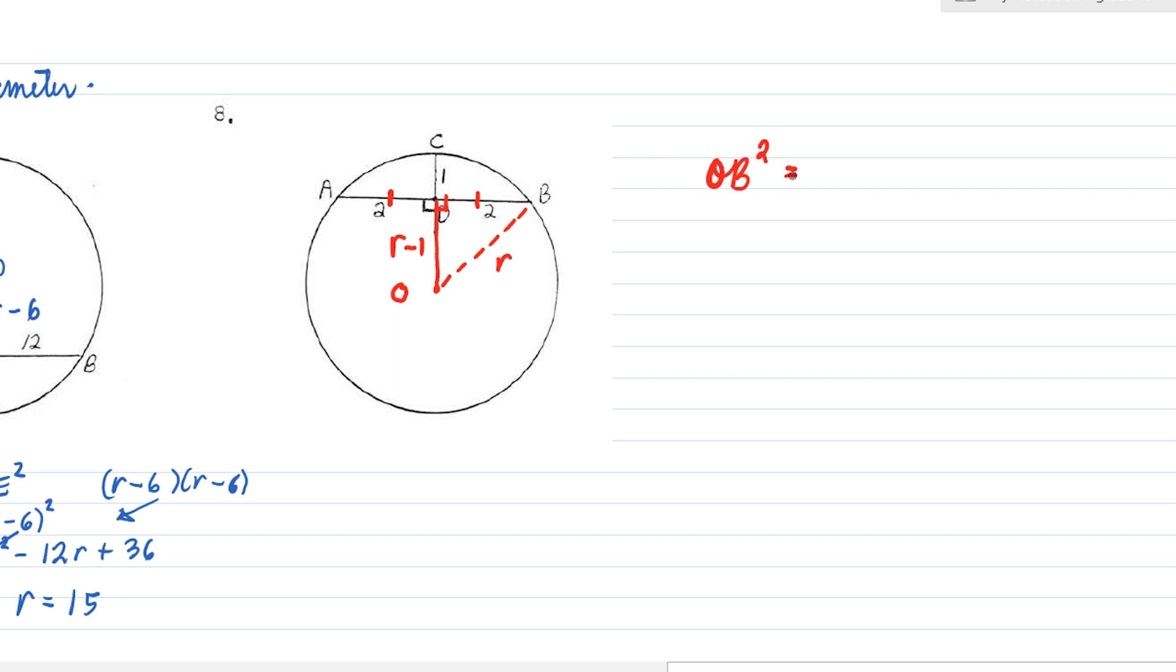So we can apply the Pythagorean theorem. We have OB squared is equivalent to DB squared plus OD squared. OB squared, that's R. R squared equals DB, DB is 2 plus OD. OD is R minus 1. R minus 1 squared.